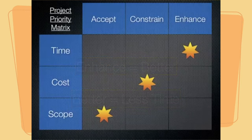So in this particular example, we are constraining the costs. We are willing to accept changes in the scope if it means that we can actually get the project done a little bit earlier.